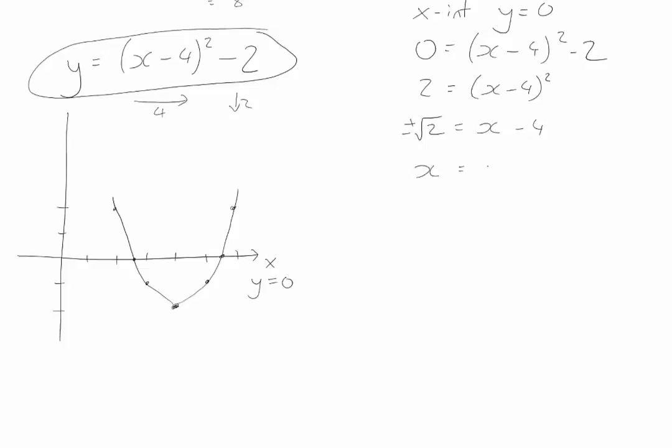So I am going to end up with x is equal to either positive root 2 plus 4, or negative root 2 plus 4. And I know they are not very nice, but you know, if you want to evaluate, you can, that is 1.414, so that is going to be 5.414.